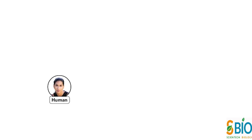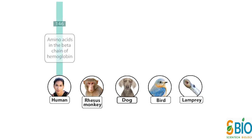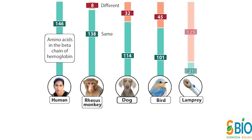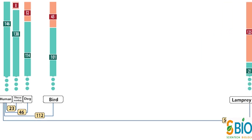इन Different Species के बीच DNA Comparison भी Evolution का Information प्रदान करती है। यदि इन Animals के बीच Hemoglobin Molecules के Genes की तुलना की जाए तो Human और Rhesus Monkey के बीच Hemoglobin का यह Difference comparatively कम है — दोनों में Amino Acids का Sequence लगभग एक समान होती है। वहीं दूसरी तरफ Lamprey और Humans के Hemoglobin में बहुत सारे Differences दिखते हैं। इस प्रकार के Studies से Biologists इस बात का अनुमान लगाते हैं कि कोई दो Species के Ancestors कितने साल पहले एक ही थे।